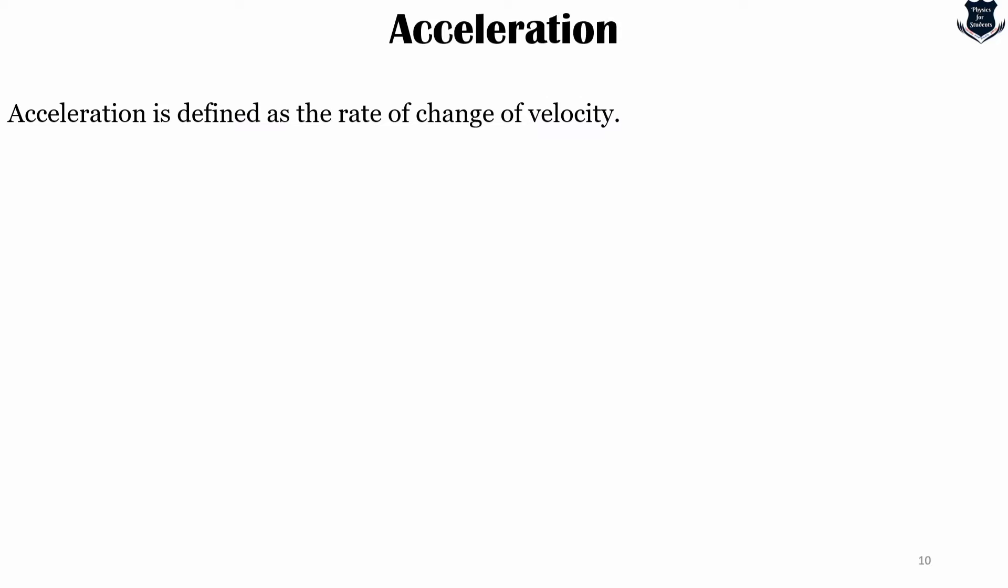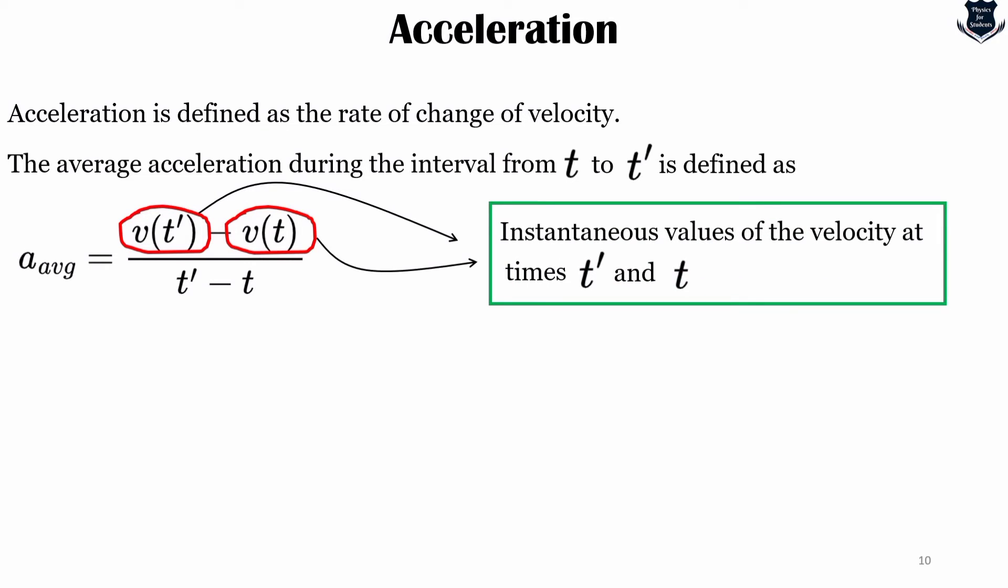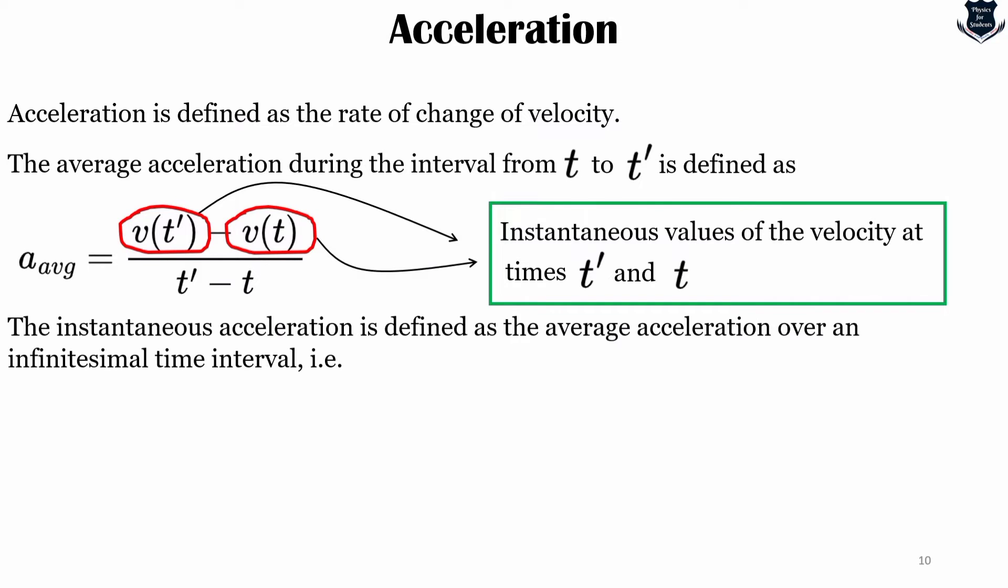The average acceleration during the interval from t to t prime can be defined as the change in velocity over the change in time, where v(t prime) and v(t) are the instantaneous values of the velocities at times t prime and t. The instantaneous acceleration is defined as the average acceleration over an infinitesimally small interval of time.